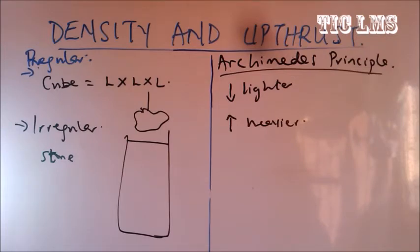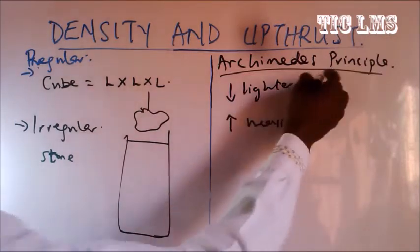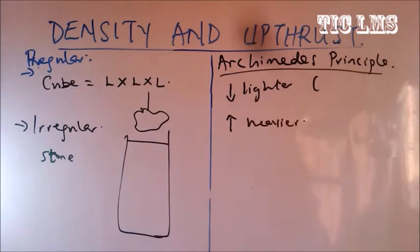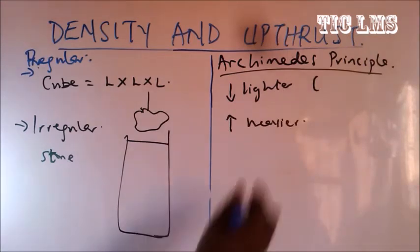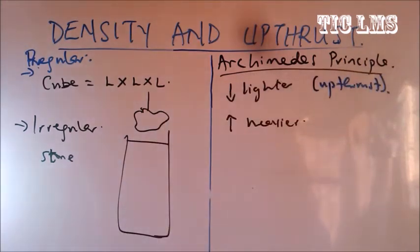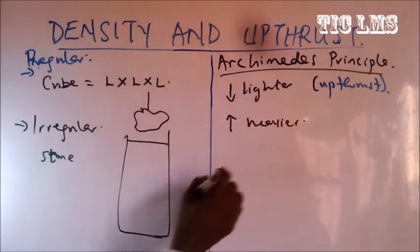The bucket was lighter inside the water because there is an upward force exerted by the water on that bucket. That upward force is what is referred to as upthrust. It is as a result of upthrust that caused the bucket inside the well to become lighter.